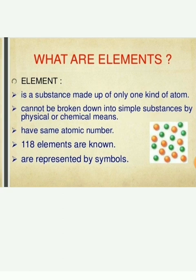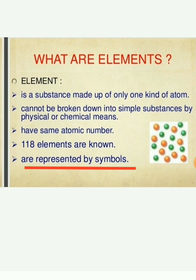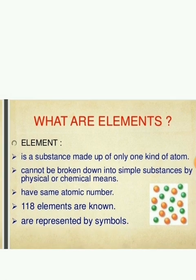There are 118 known elements — you will learn that in your higher classes. Elements are represented by symbols. For example, oxygen is represented by the symbol O. Capital O is the symbol for oxygen. Oxygen starts from the letter O, so we represent the symbol as O.